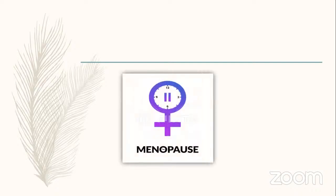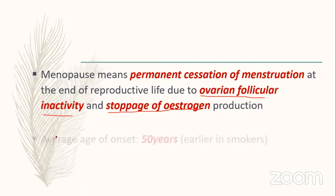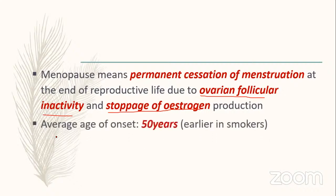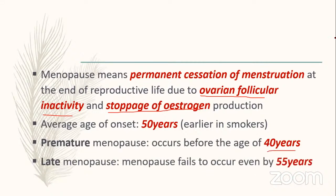Menopause is defined as the permanent cessation of menstruation at the end of reproductive life due to ovarian follicular inactivity and stoppage of estrogen. The average age of onset is 50 years, earlier in smokers. Premature menopause occurs before 40 years; late menopause is when it has not occurred even after 55 years.